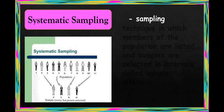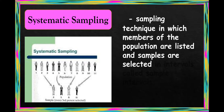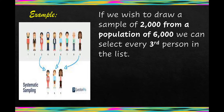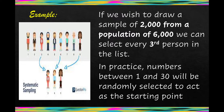Systematic sampling is a sampling technique in which members of the population are listed and samples are selected at intervals called sample intervals. For example, if we wish to draw a sample of 2,000 from a population of 6,000, we can select every third person in the list. In practice, a number between 1 and 3 will be randomly selected as a starting point, so we choose the third person, the sixth person, the ninth person, and so on.